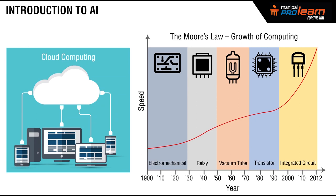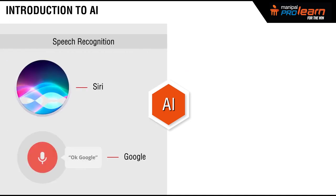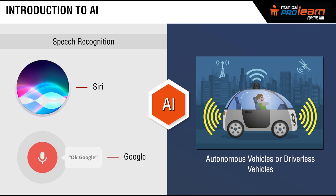That's why you hear a lot about Artificial Intelligence nowadays. You are probably aware of speech recognition systems like Siri or Google, where you talk to the system — that is nothing but AI. You have also heard about autonomous vehicles or driverless vehicles, which is also AI. AI is already around us in some form or the other, and we will talk about how to implement AI and develop AI applications during the course of this program.